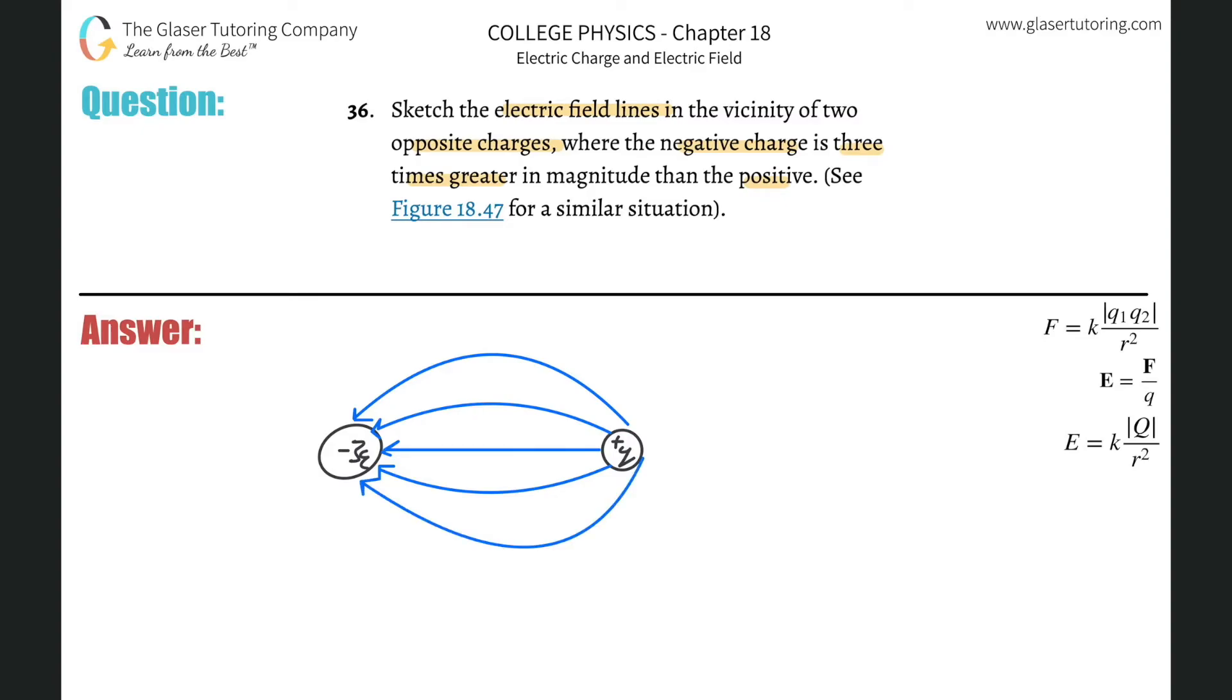That means if there's five emanating from this positive, there better be 15 coming into the negative one because it's three times larger.